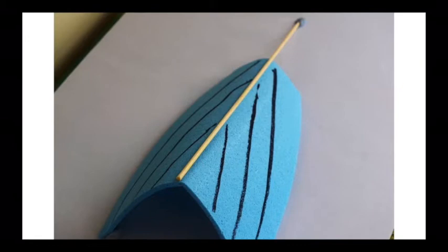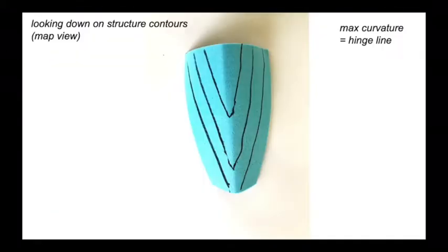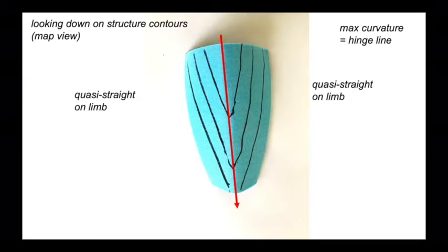So we have a shape on these structure contours. Let's spin around. So here we are looking down on the structure contours on our sponge layer. The maximum curvature corresponds to the hinge line, there it goes plunging down the screen. So on the limbs which are more or less planar, the structure contours are more or less straight and more or less equally spaced, so we can use this pattern to trace out the shape of folds in three dimensions.